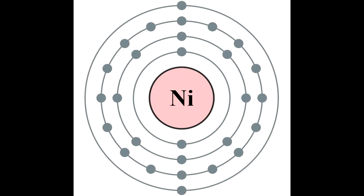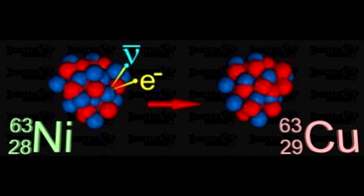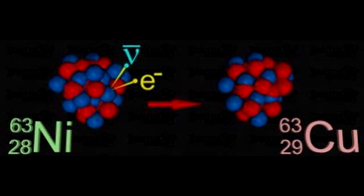Nickel-63 has 28 protons and 35 neutrons. It has an estimated half-life of approximately 100 years and undergoes radioactive decay through negative beta particle emission, leading to the creation of a stable copper-63 nucleus.